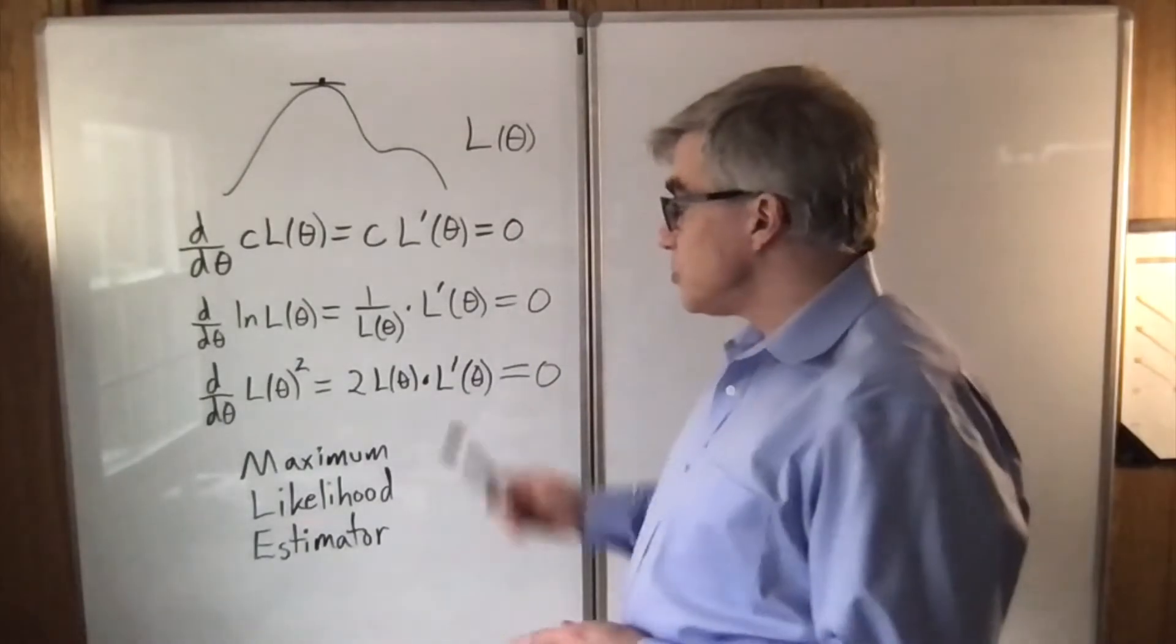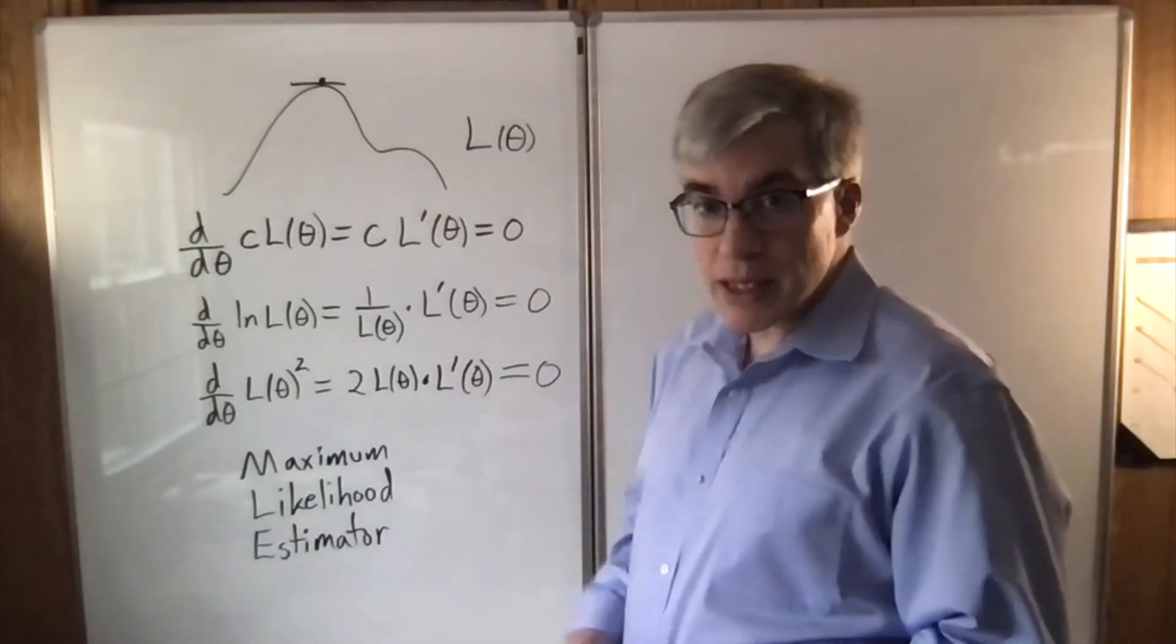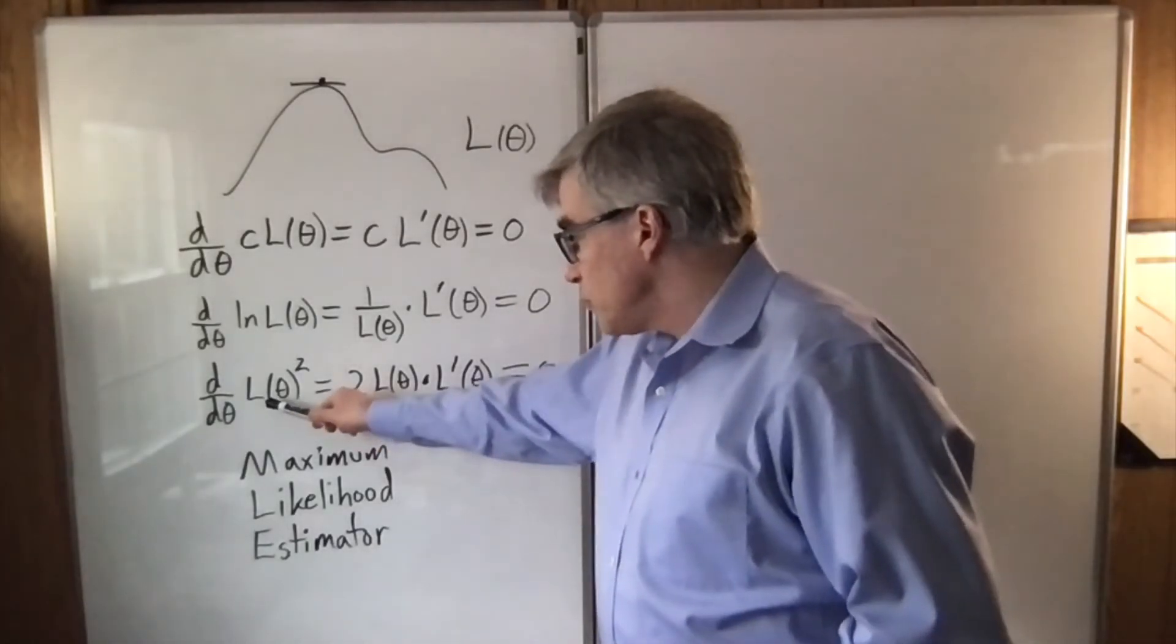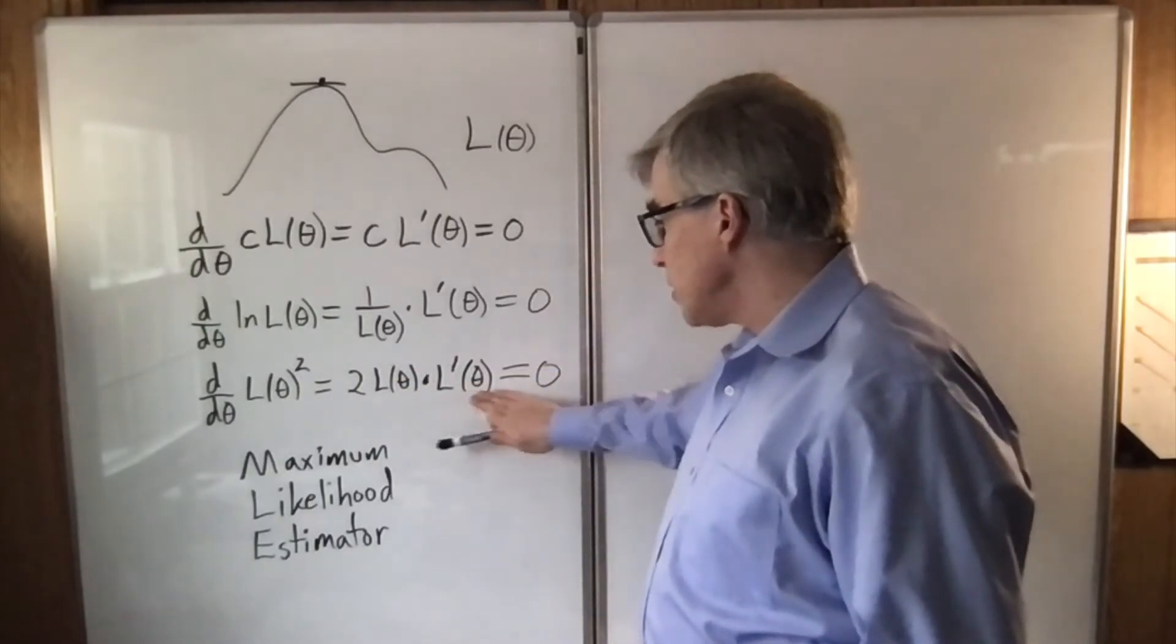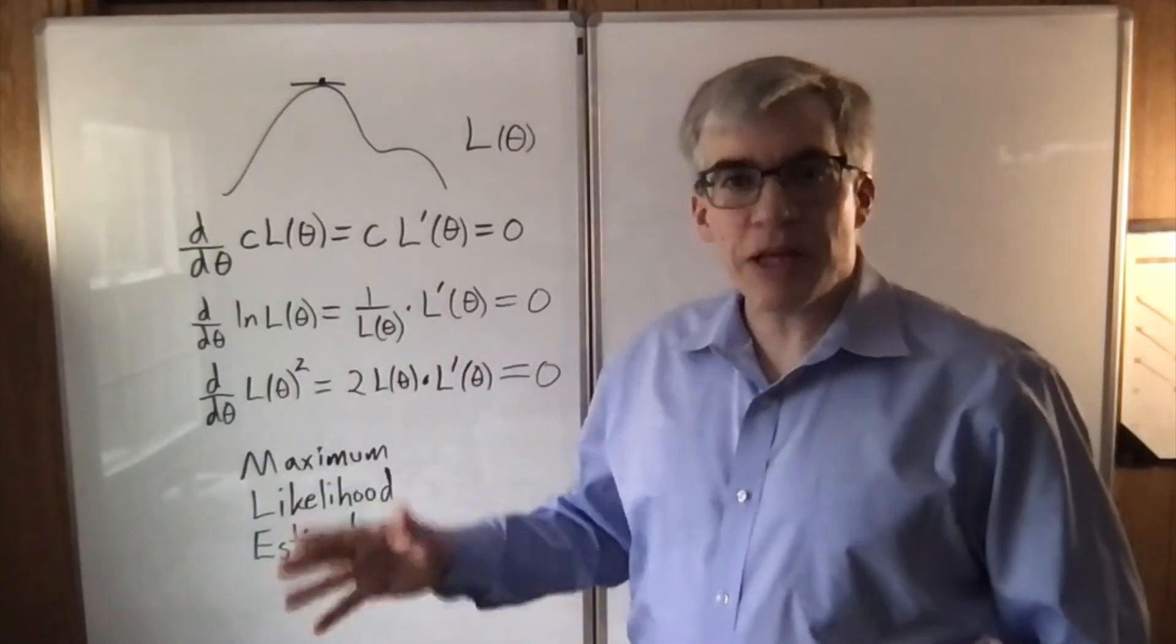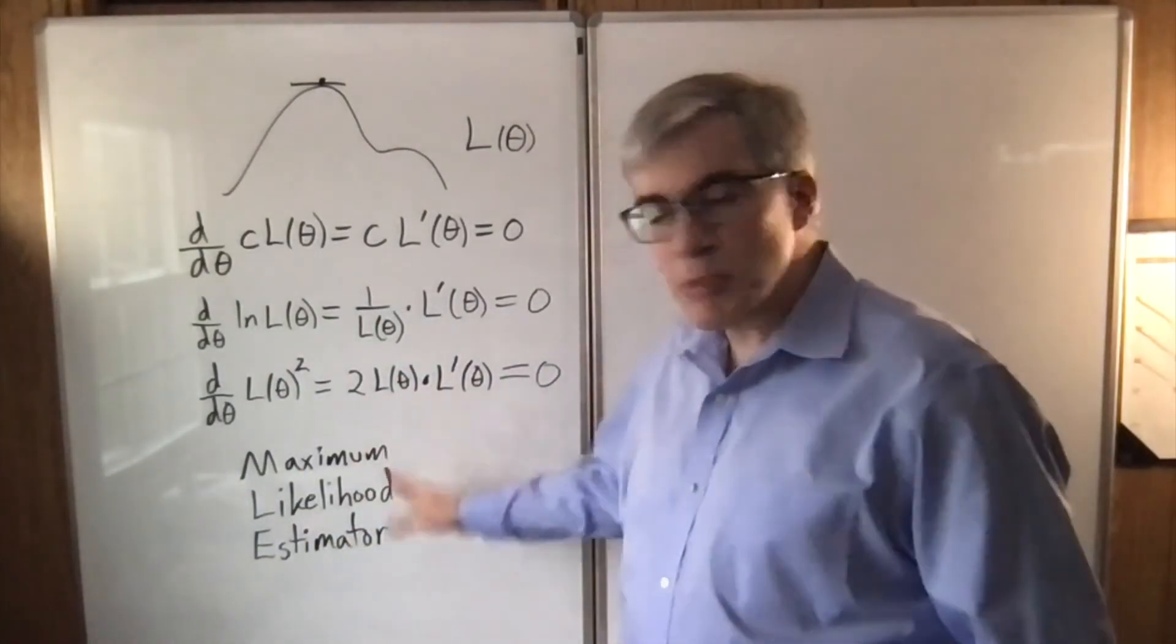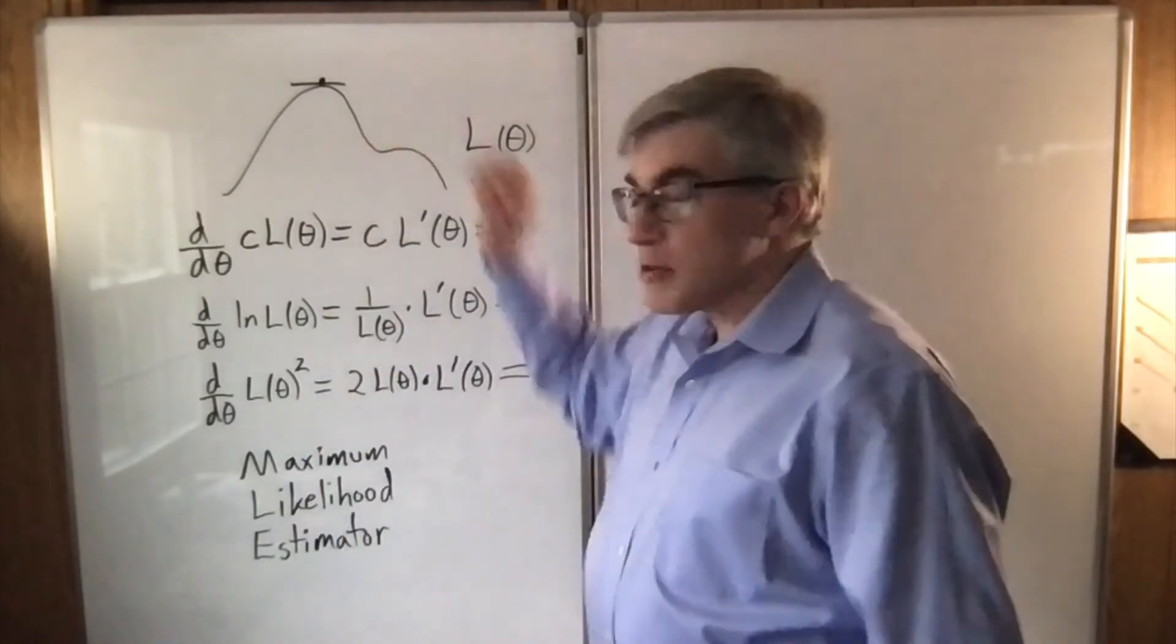Another option is to square the likelihood and find where that is a maximum. Because if you take the derivative of likelihood squared, you get two times likelihood times the derivative of the likelihood. And in that case, it'll work just fine. Because we don't actually care about the likelihood, we just care about the maximum likelihood estimator. We want our best guess for where the function hits a maximum.